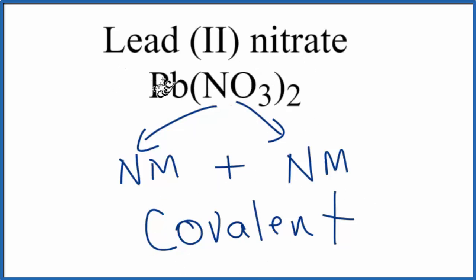But overall, because we have the lead two ion which is positive, then the negative nitrate ion, two of those, we have that positive and negative that are attracted to form the ionic bond for Pb(NO3)2.